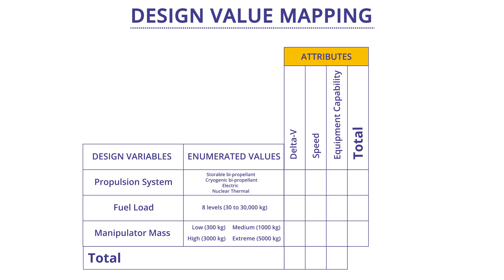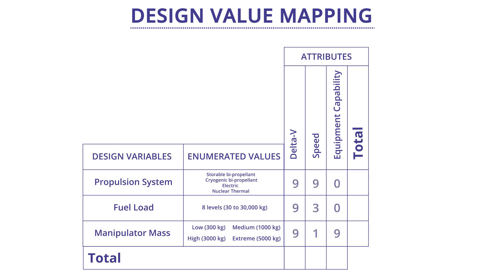We start by taking our attributes and placing them along the columns of a matrix, often including their units and range. Next, we put the design variables along the rows — this could be a very large brainstormed list. Each design variable should have associated units and range. Then, either individually or in groups, we enter a 0, 1, 3, or 9 in the cells at the intersection of each row and column. These represent the degree of impact a design variable has on an attribute: 0 means no impact, 1 means light impact, 3 means moderate impact, and 9 means strong impact. This is our first-order model.